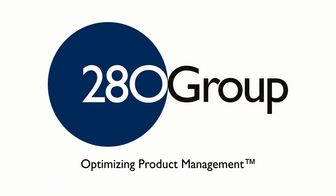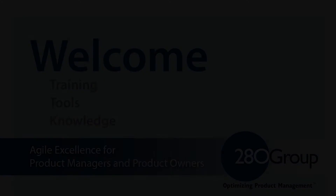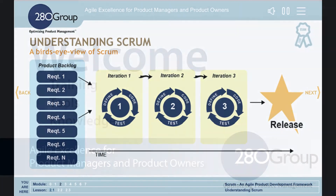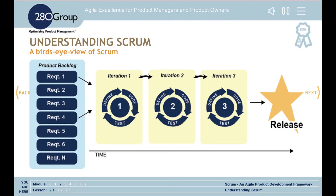This video is brought to you by the 280 Group, Optimizing Product Management. This is a sample of the course materials from the Agile Excellence for Product Managers and Product Owners Online Self-Study course. Let's start with a bird's eye view of Scrum and define the main phases of a Scrum project framework. We'll explore each of these in detail later.